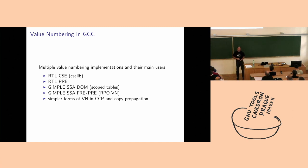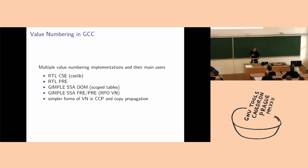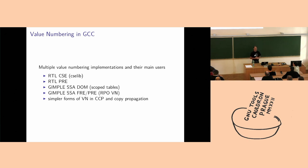In GCC we have very many value numbering implementations. In the early days, we at least had the CSE lib, which is used by RTL CSE, but also some other passes in the RTL pipeline — for example, var tracking.